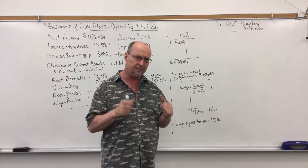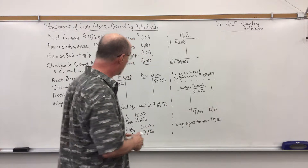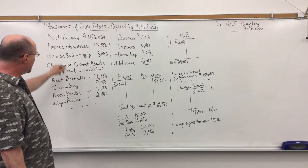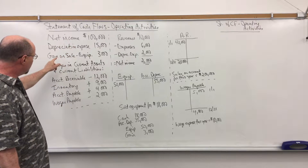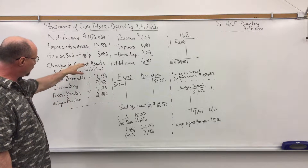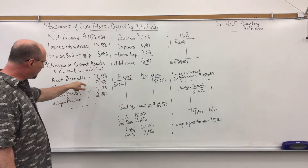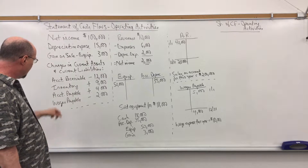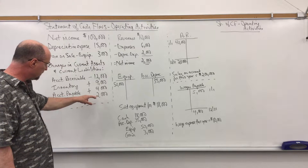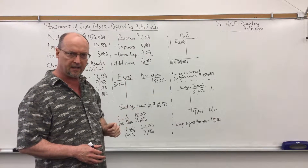I've put a lot of information on the board. Here's the information we're going to start with: net income is $100,000, depreciation expense $15,000, gain on sale of equipment $3,000. And then we have the following changes in current assets and current liabilities: accounts receivable decreased $12,000, inventory increased by $9,000, accounts payable increased by $4,000, and wages payable decreased by $2,000. These represent the differences between the beginning and end of year balances.